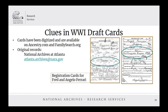In the same way that the census provides clues to citizenship, World War I draft cards are another NARA record that can help you determine your immigrant ancestor's status at a specific juncture in time. The cards have been digitized and are available online through the National Archives catalog, Ancestry.com, and FamilySearch.org.